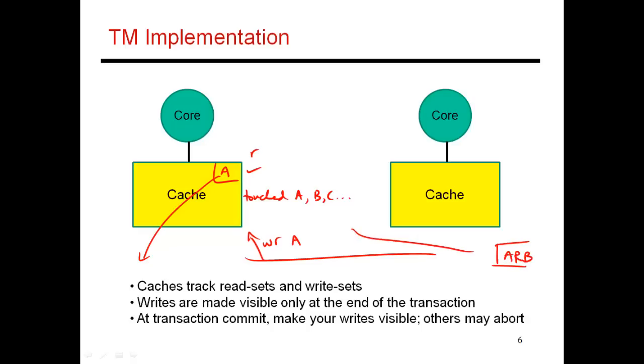And before you commit, you have to contact this arbiter and get permissions to commit. So this arbiter is basically handing out a single token, which allows one transaction to commit at a time.